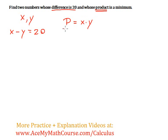Now I want to minimize P. How can I do that? Well, first I need to have just one variable for this function. And I have x and y and I want to get rid of either one of them. So what I'm going to do here is that I will isolate x for our difference equation.